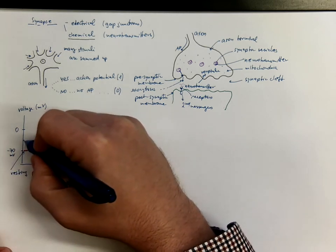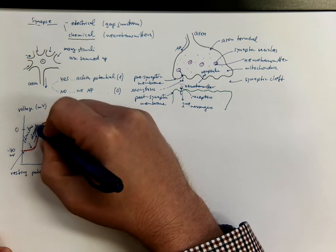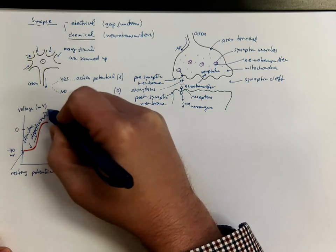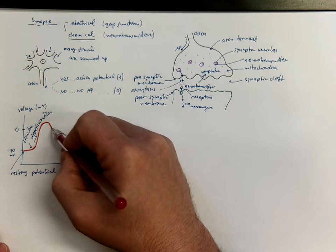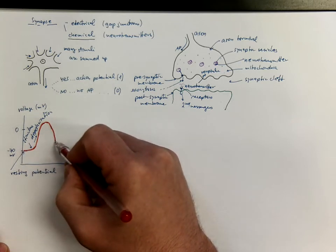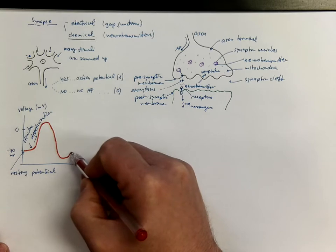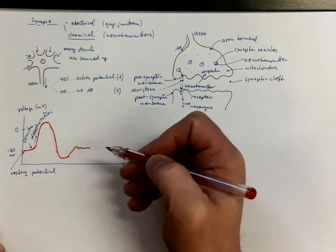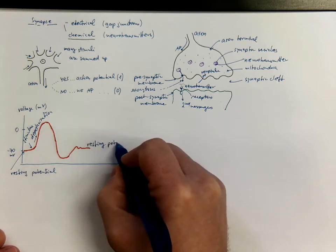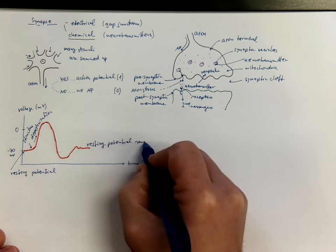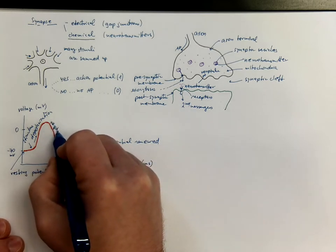This is called depolarization. So we get a stimulus here and the response is depolarization. Then, with the activity of other ion channels and ion pumps, the negative voltage is renewed and it even goes for a short time to more negative values until it settles back and the resting potential is renewed. This process is called repolarization.